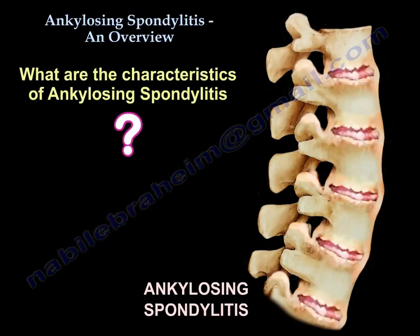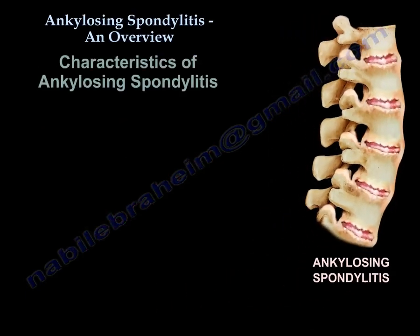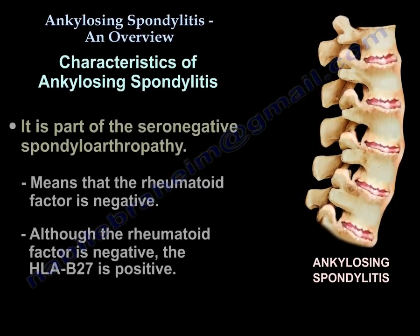The characteristics of ankylosing spondylitis: it is part of the seronegative spondyloarthropathy group, meaning the rheumatoid factor is negative. Although the rheumatoid factor is negative, the HLA-B27 antigen is positive.